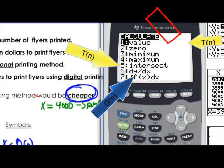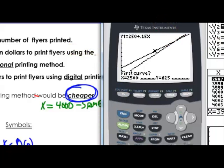So what is that intersection point? Just to remember, second trace and then we choose 5. And then we enter 3 times and we find out that sure enough at 4,000 copies they both cost 850 dollars.